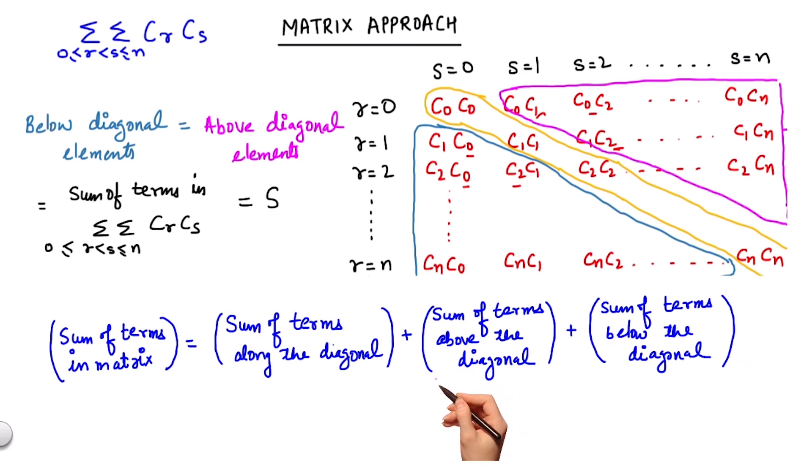Now we have already seen this is equal to S, this is equal to S. Now we are concerned with sum of the terms along the diagonal.